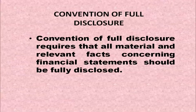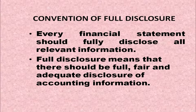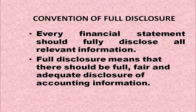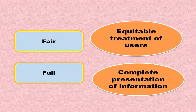The next convention is the Convention of Full Disclosure. It requires that all material and relevant facts concerning financial statements should be fully disclosed. Every financial statement should fully disclose all relevant information. Full disclosure means there should be full, fair, and adequate disclosure of accounting information. Adequate means a sufficient set of information; fair means equitable treatment of users; full means complete presentation of the information.